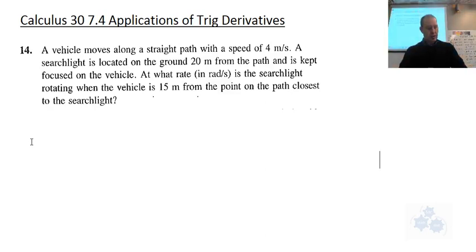All right, so for this question here, it says a vehicle moves along a straight path with a speed of 4 meters per second. A searchlight is located on the ground 20 meters from the path and is kept focused on the vehicle. At what rate in radians per second is the searchlight rotating when the vehicle is 15 meters from the point on the path closest to the searchlight?